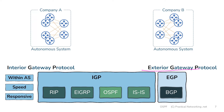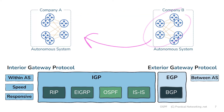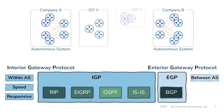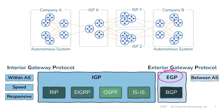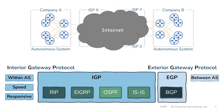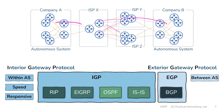By comparison, exterior gateway protocols are built for sharing routes between autonomous systems. Company A could share with company B the IP address space that company A owns, and company B could then do the same. Most companies will share their routes with an ISP, or internet service provider. Each company is connected to one or more ISPs, and they share their routes using an exterior gateway protocol, mainly BGP. These interconnected ISPs are essentially what the internet is — a bunch of internet service providers all connected to one another, each being their own autonomous system.